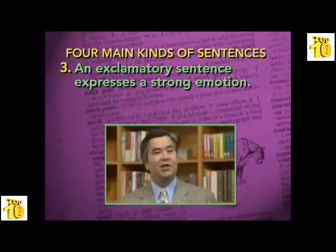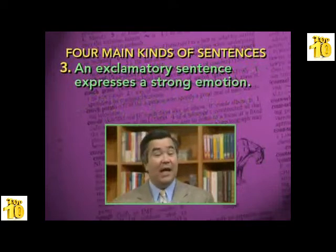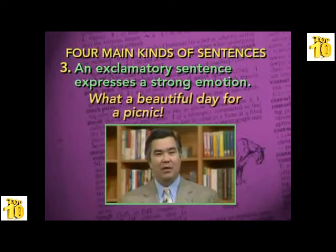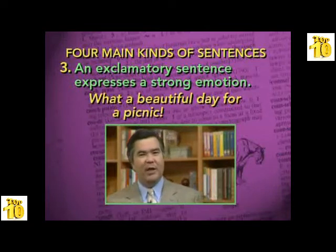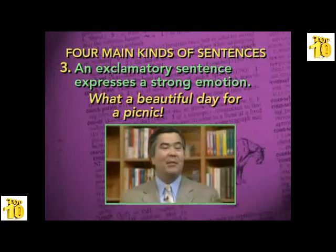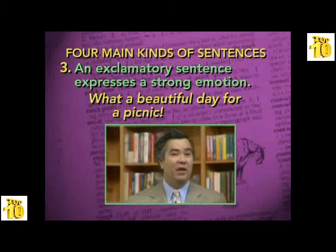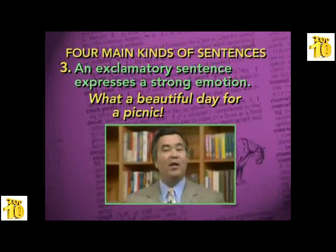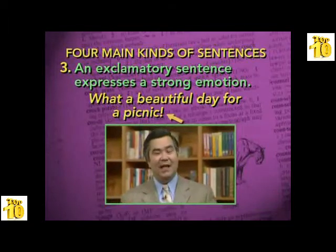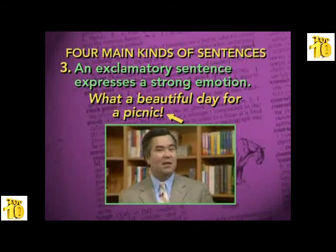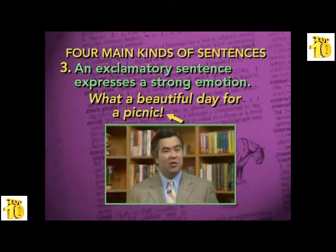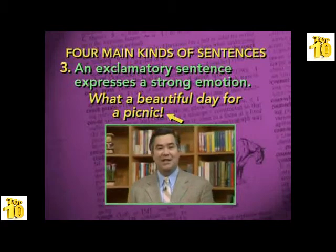The third type of sentence is an exclamatory sentence. An exclamatory sentence expresses a strong emotion. For example: 'What a beautiful day for a picnic!' You can tell from reading that sentence that strong emotion or strong feeling is being expressed. This makes it an exclamatory sentence, and it ends with an exclamation point — a special mark of punctuation used to indicate that strong emotions or feelings are being expressed.